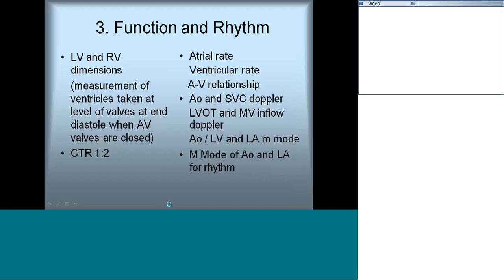Now we move to the third part of fetal echo — function and rhythm. The cardiothoracic ratio should normally be 1:2, meaning the heart occupies approximately 50% of the thoracic cavity. Standard normograms are available for individual valve measurements, SMA, aorta, main pulmonary artery, and ventricular dimensions. Ventricular measurements should be taken at the level of the valve at end-diastole.